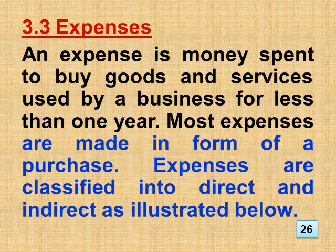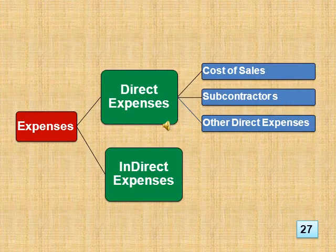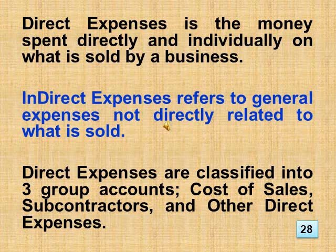Section 3.3 Expenses: An expense is money spent to buy goods and services used by a business for less than one year. Most expenses are made in the form of a purchase. Expenses are classified into direct and indirect. Direct expenses is the money spent directly and individually on what is sold by a business. Indirect expenses refers to general expenses not directly related to what is sold. Direct expenses are classified into three group accounts: cost of sales, subcontractors, and other direct expenses.